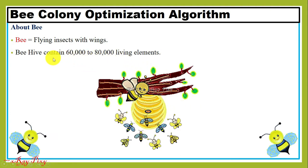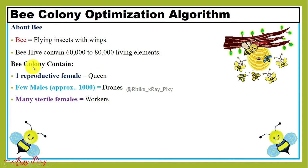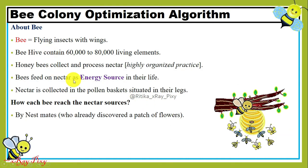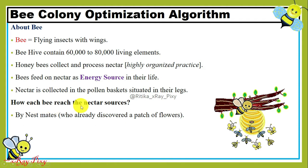This is a beehive and it contains 60,000 to 80,000 living elements. Inside the bee colony there is one reproductive female known as the queen, a few males approximately 1,000 known as drones, and many sterile females known as workers. In real life, honey bees collect and process nectar — a highly organized practice. They use nectar as an energy source for survival. Nectar is collected in the pollen baskets situated on their legs. Each bee reaches nectar sources by following nest mates who have already discovered a patch of flowers.